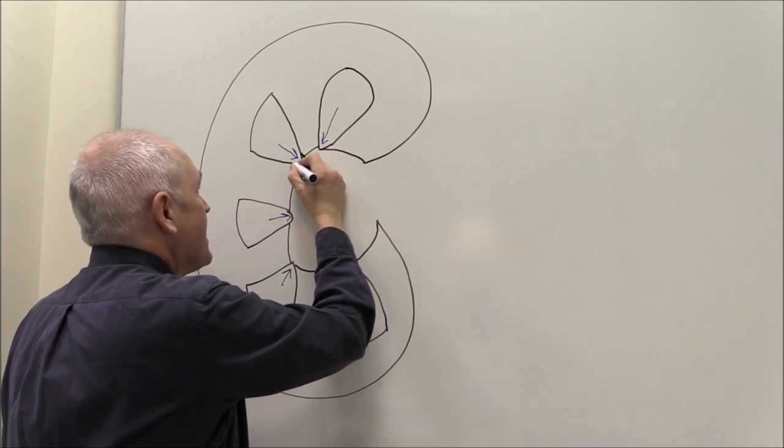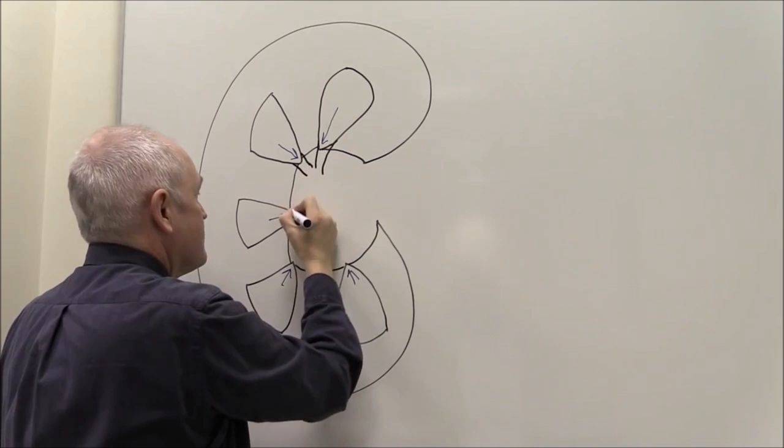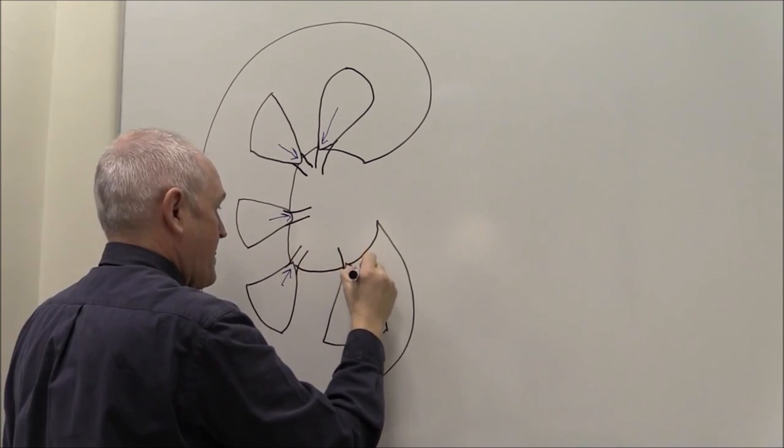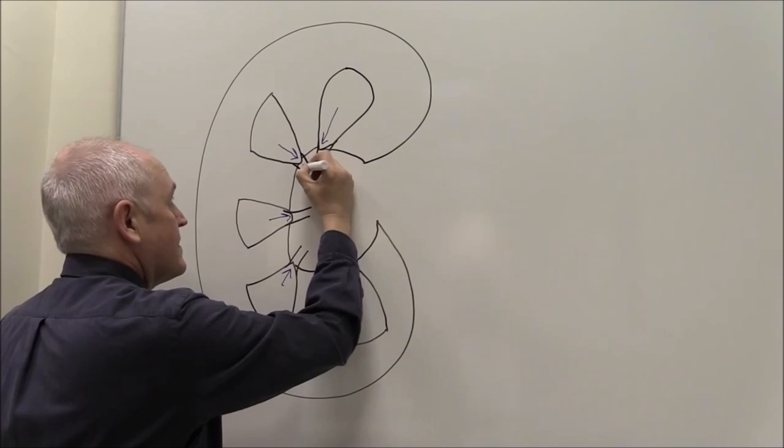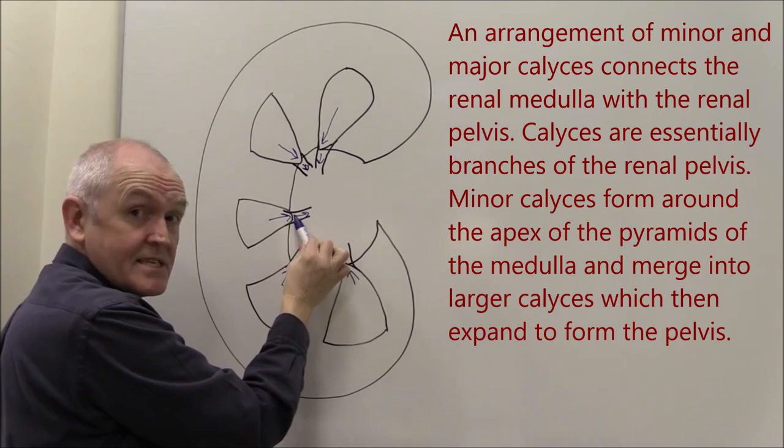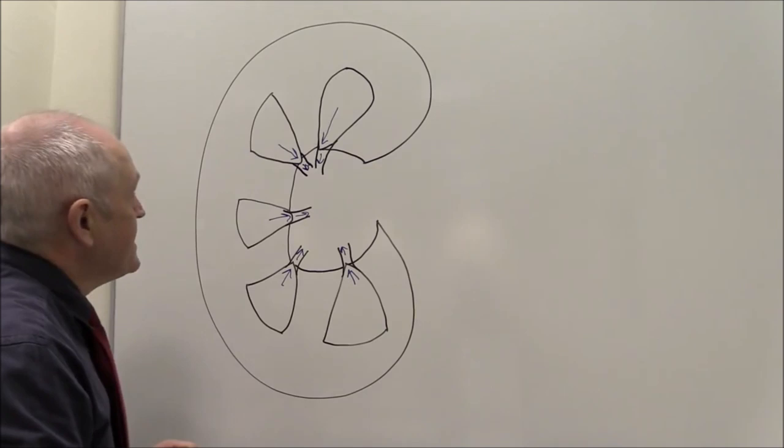So what's happening here is that there are tube-like structures coming off the renal pyramids. So as the urine is produced it's going to pass into these tube-like structures. And these are the renal calyces. So that would be a calyx. Collectively they are calyces.